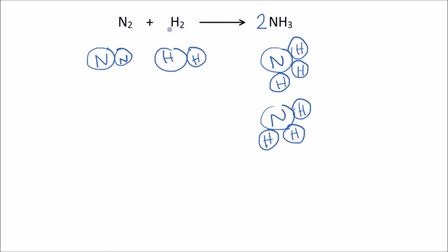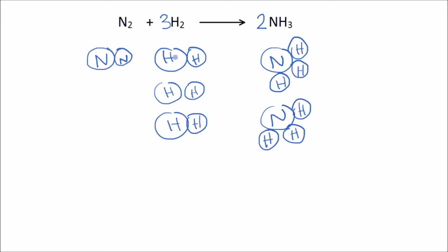So what can we do to get the hydrogens to balance out? Well, if we multiply the hydrogen molecule by three — meaning instead of one hydrogen molecule, we now have three hydrogen molecules — then we have six hydrogen atoms on both sides of the equation and two nitrogen atoms on both sides of the equation. So that is now balanced.